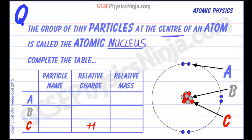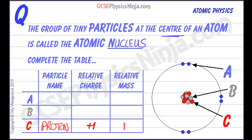Let's take a look at this table which will summarise the atomic structure. Starting with the proton — labelled C here — it has a relative charge of plus 1 and a relative mass of 1. These are relative values; all these particles are described relative to each other.